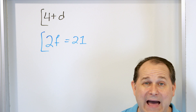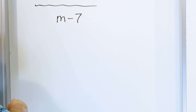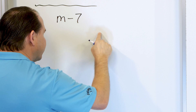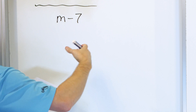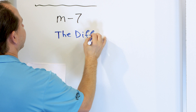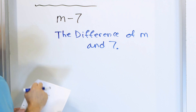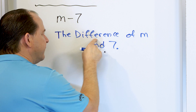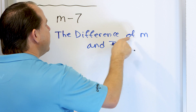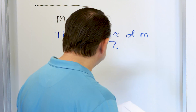Now we're going to write down some math and talk about what it might represent. The expression is M minus 7. You could literally say 'M minus 7' with the word minus written out, but the more mathematical way is to say the difference of M and 7. The word difference means subtraction, so the difference of M and 7 means you take M and subtract away 7.